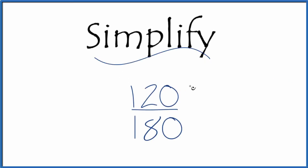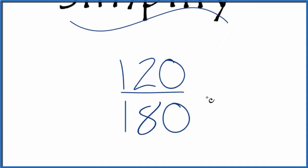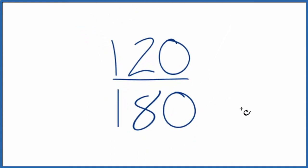Here's how you simplify the fraction 120 over 180. What we want to do is find another fraction that's equivalent, has the same value as 120 divided by 180, just in its lowest terms.